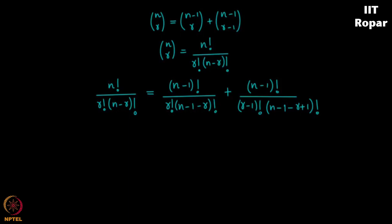I just subtract n minus 1 and r minus 1 — rather r minus 1 is subtracted from n minus 1. That's why you get n minus 1 minus r minus 1, and minus minus becomes plus. So you have a minus 1 and a plus 1 which get cancelled, giving you simply n minus r factorial. This is the same old school method of proving a formula by showing that the left hand side is indeed equal to the right hand side.